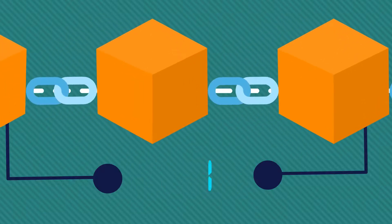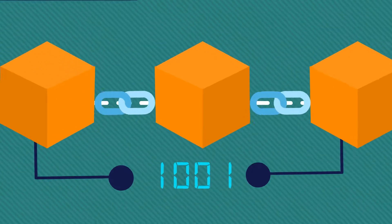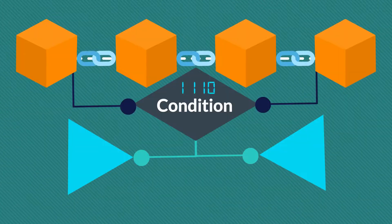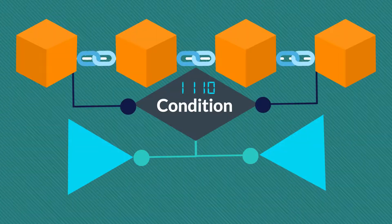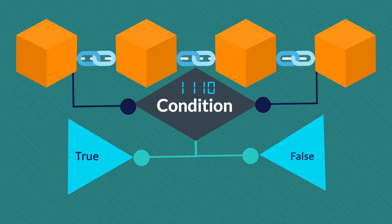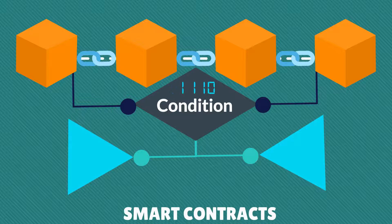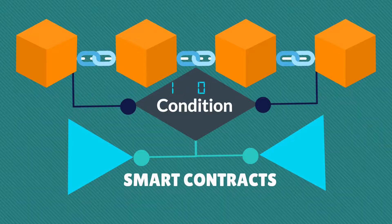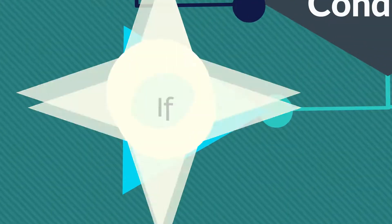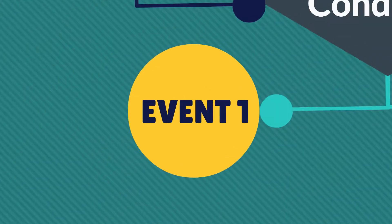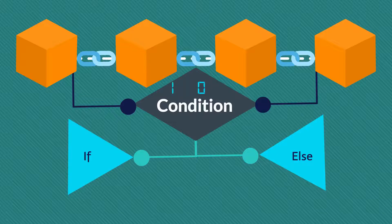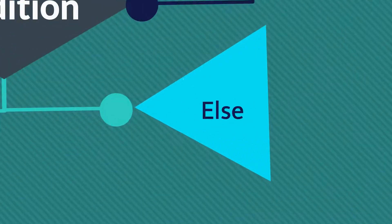Smart contracts are programs that are stored in the Ethereum blockchain. Programs created to satisfy certain conditions like true or false, if or else, etc., in the Ethereum blockchain are called smart contracts. In smart contracts, if a given condition is satisfied, a course of action takes place; else another set of events executes.